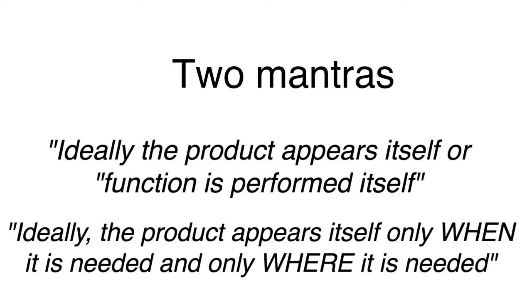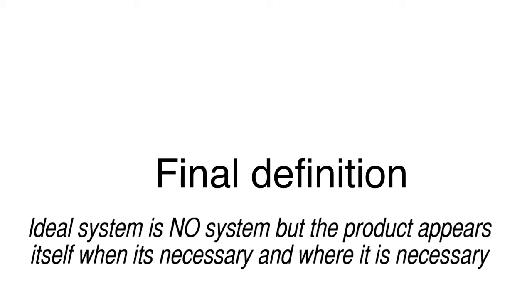Altshuler wanted the designer to think of a technical system performing the required function — not always, but ideally. The function is supposed to be performed only when it is necessary and only where it is needed. I called it 'operation time' — when it is needed — and 'operation zone' — where it is needed, exactly. The modified, more aggressive definition of ideality is: the ideal system is no system, but the product appears itself when it is necessary and where it is necessary — in the operation time and in the operation zone.